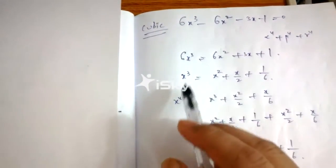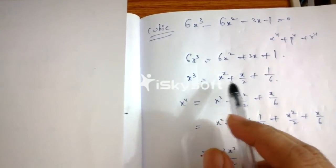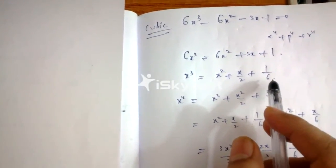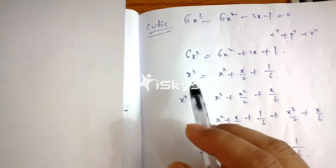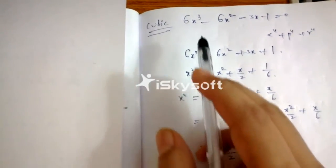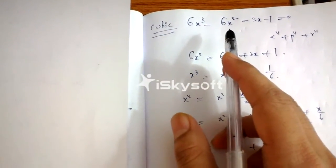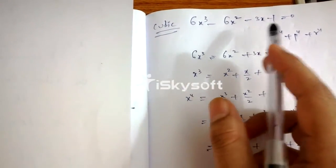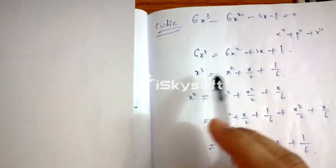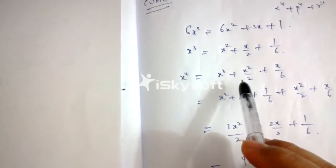From this equation, dividing by 6 we get x³ = x² + x/2 + 1/6. Now just multiply both sides by x. Remember, x is not 0 because 0 is not the root of this equation — if you put x = 0 you get -1 = 0, so 0 is not the root. So I can multiply both sides by x.